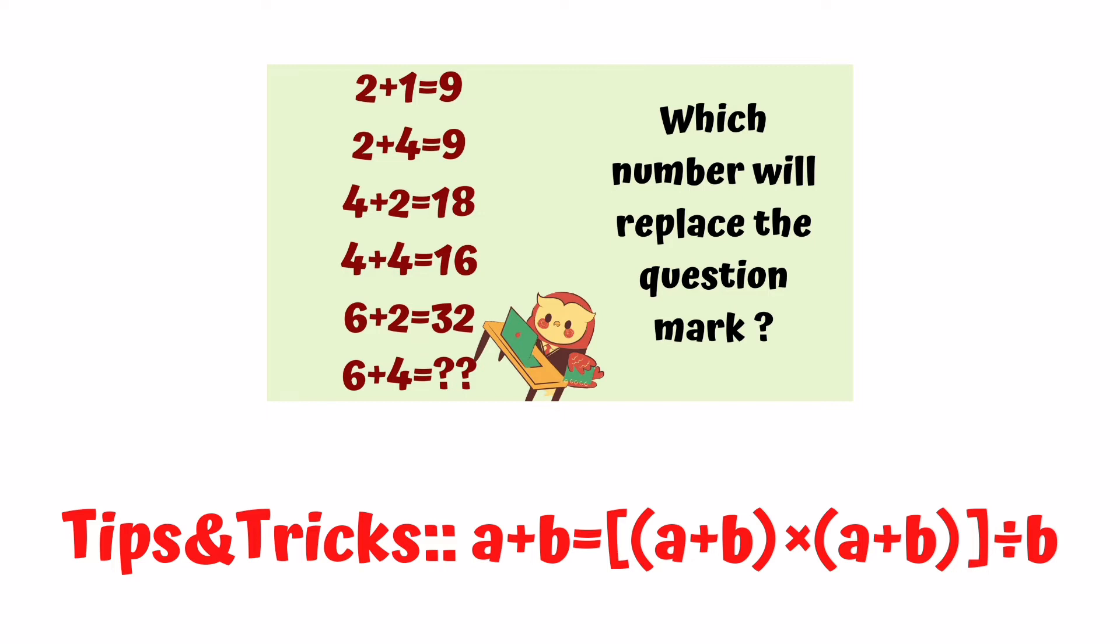A plus B equals, in brackets, A plus B times A plus B, close bracket, divided by B. Let's follow this trick. All rows are satisfied. Let's see.